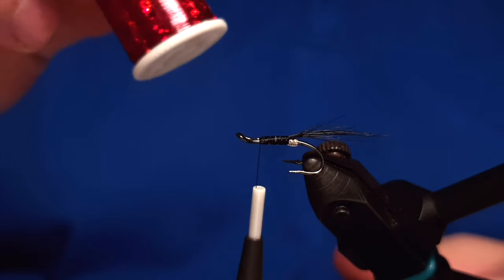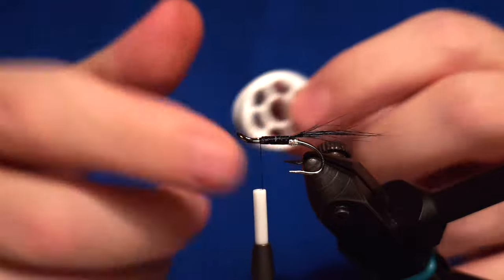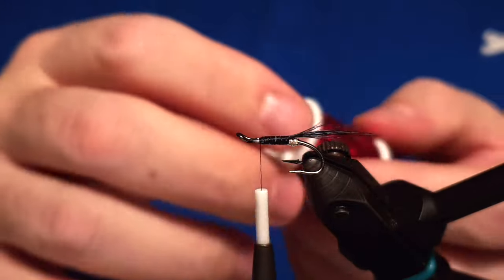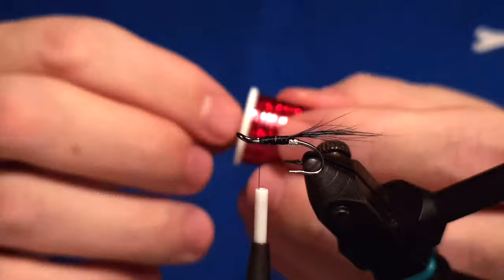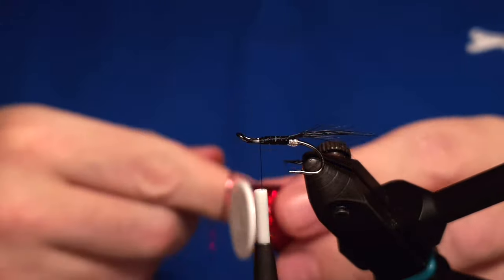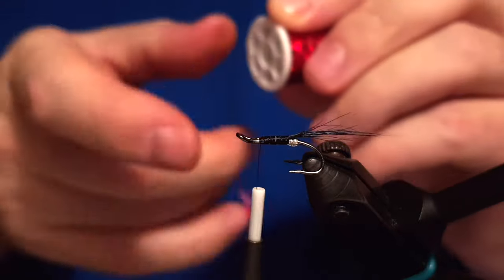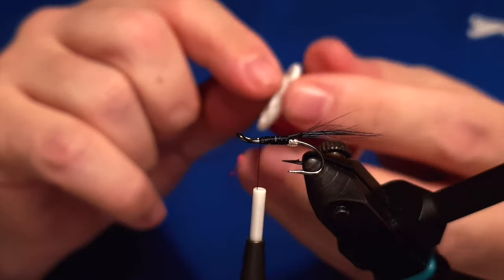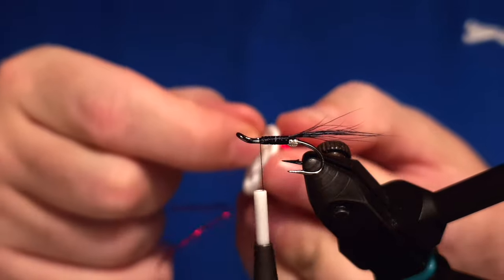For the body of the fly I'm using a red tinsel. It's actually red hollow tinsel which shines a little different. It looks cool, I like it. And remember when we are tying the Brahan flies, a Black Brahan has the red body.